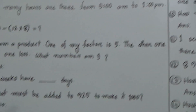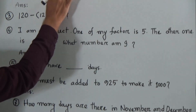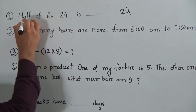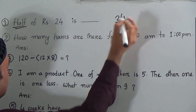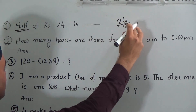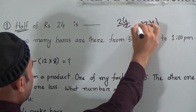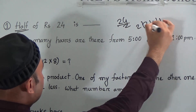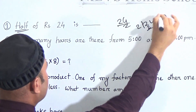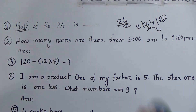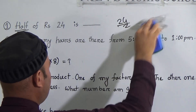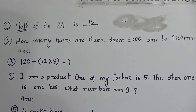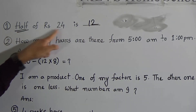Question one: half of 24 rupees. Half means divided by 2, so that means 24 divided by 2. If we divide 24 by 2: 2 ones are 2, bring down 4, 2 twos are 4, that means 12. Therefore, half of 24 rupees is 12. The answer is 12.